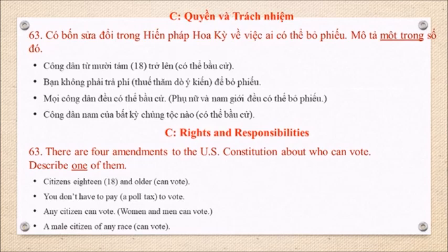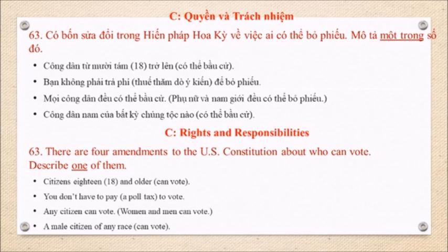Question 63: There are four amendments to the U.S. Constitution about who can vote. Describe one of them. Citizens 18 and older can vote. You don't have to pay a poll tax to vote. Any citizen can vote. Women and men can vote. A male citizen of any race can vote.